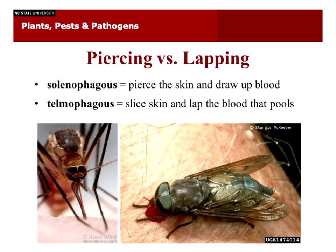There are two different modes of blood sucking. There's a term called solenophagy versus telmophagy. Solenophagous organisms pierce the skin and draw blood up like a straw — exemplified by mosquitoes piercing the skin and tapping into blood vessels. Telmophagous insects actually slice the skin open like little scalpels and then lap up the blood that pools on the surface, as exemplified by a large horse fly feeding on somebody. Solenophagous insects are usually less noticeable — you won't feel their bites right away. Whereas even very small insects that slice open the skin create much more pain.